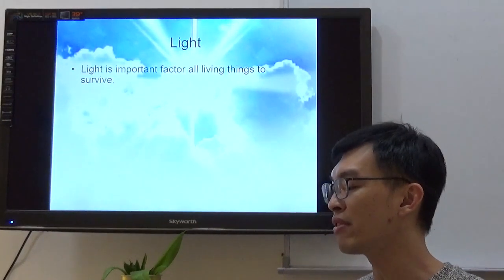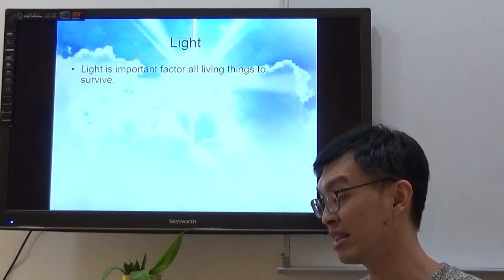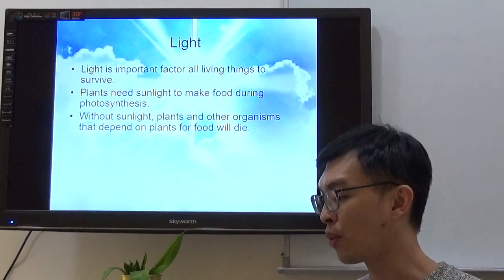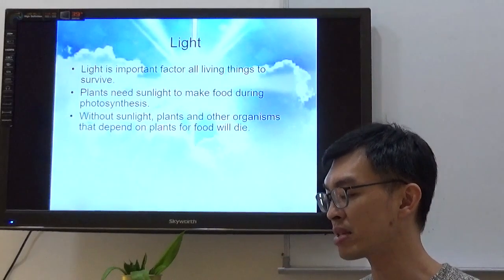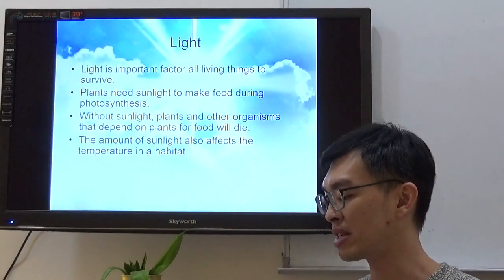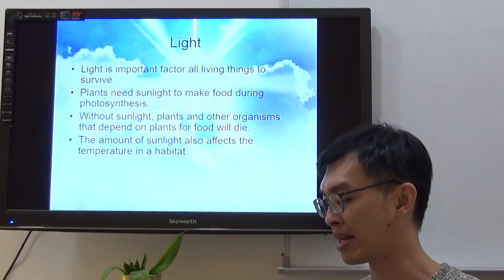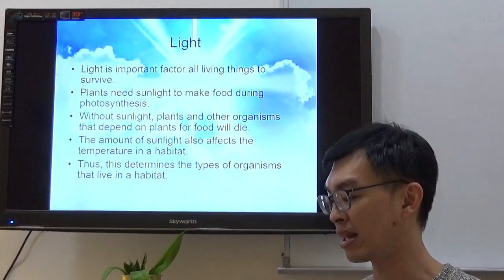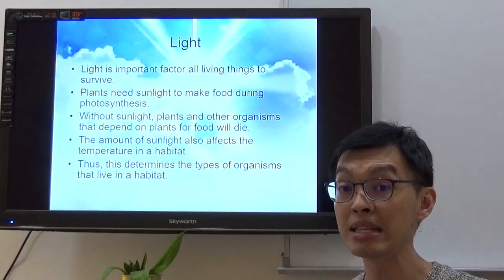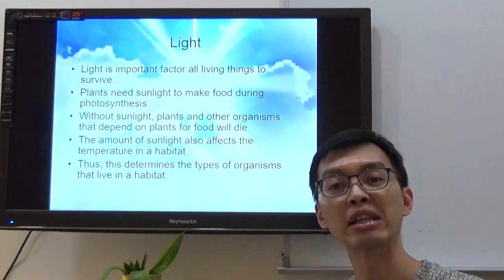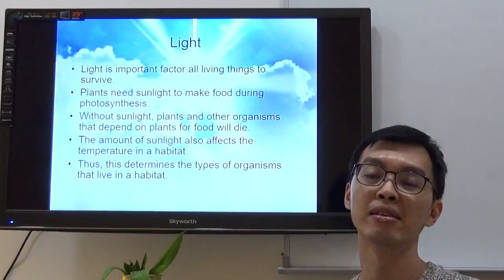Light is an important factor. All living things need to survive. Plants need sunlight to make food during photosynthesis. Without sunlight, plants and other organisms that depend on plants for food will die. The amount of sunlight also affects the temperature in the habitat. Thus, this determines the type of organisms that live in the habitat. Always remember, just now I said, the main source of light comes from the sun. And also, the main source of heat also comes from the sun.